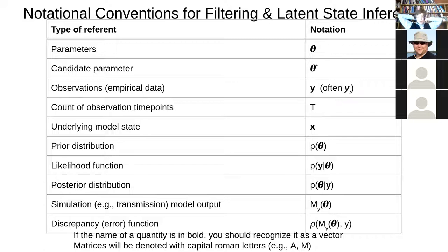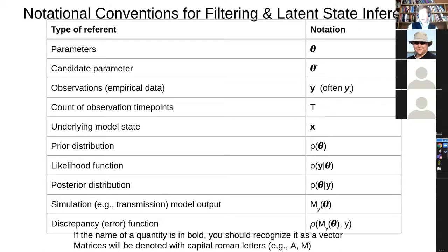In an agent-based model, the model state is going to be much more fulsome — much more involved. It would be the state of each agent, their particular pattern of connections, their locations in geographic space, etc. It's more expansive. We're going to denote a prior distribution as P(θ). Prior — and this is prior to any data being received, prior to any information about this system — this is the probability of having a certain set of parameters, our subjective assessment of different values of θ.